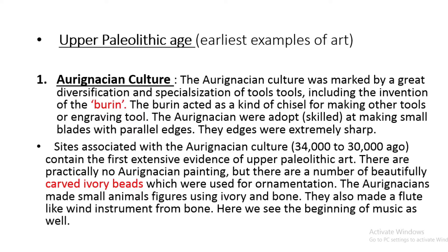This includes the invention of the burin, which was used as a chisel. With the burin we could create different tools and engrave on them. Aurignacian people were also skilled at making small blades with parallel edges that were extremely sharp.